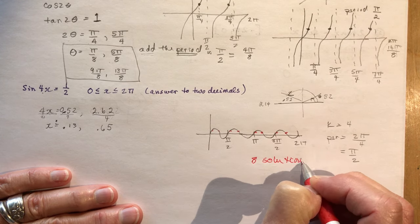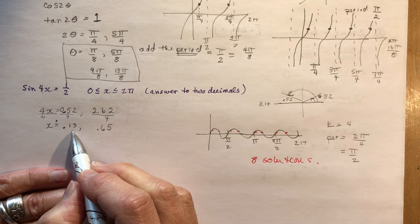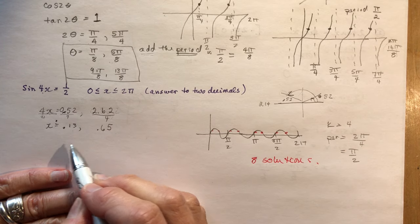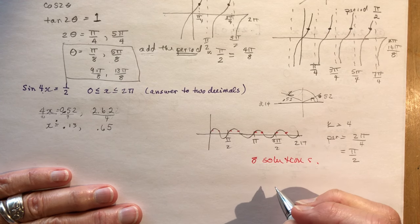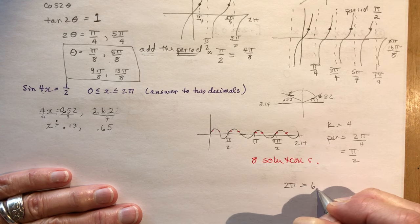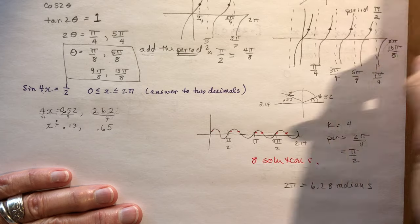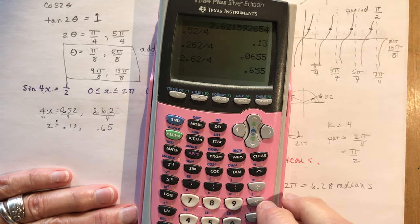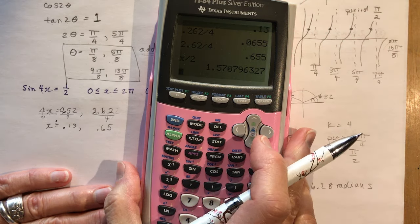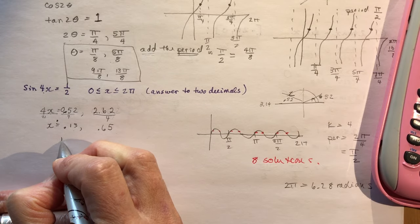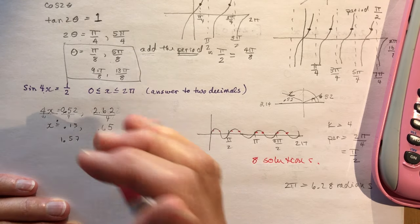Okay, how are you going to find those? Just like we did above. You want to add the period. So you want to add π over 2 to each of these solutions until you get to 2π. So 2π is going to be 6.28, right? 6.28 radians. So if I'm adding π over 2, so let's go back here and find out what π over 2 is. π divided by 2. And I have 1.57. So I'm going to add 1.57 to each of these numbers.